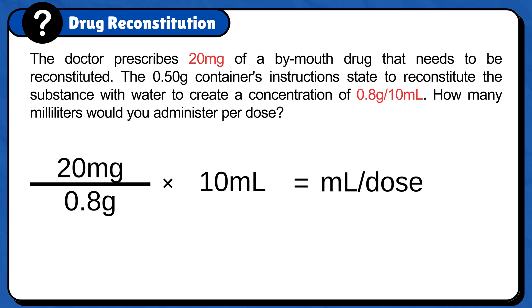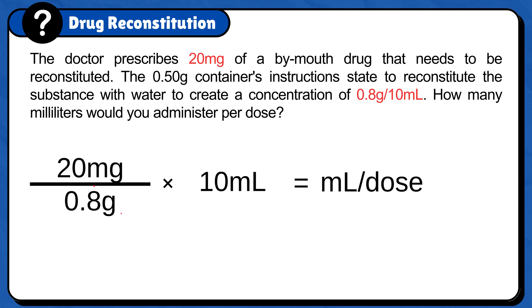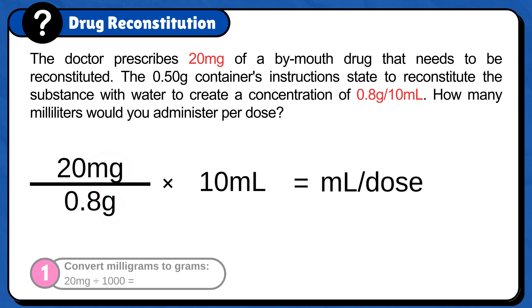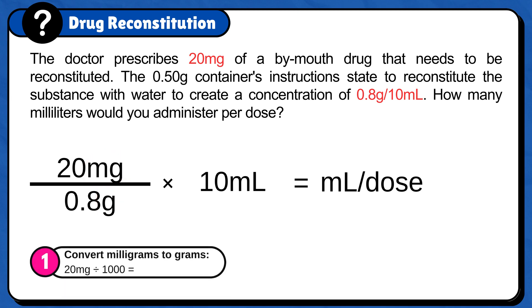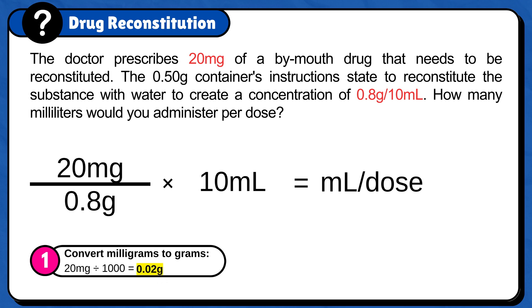But you will notice that the units on top and bottom are different — one is in milligrams and the other is in grams. So first, we need to convert milligrams to grams: 20mg divided by 1000 is 0.02 grams.